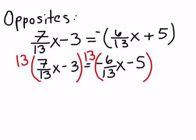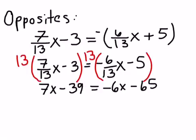But just a slight difference of signs on one side, so we will actually get a different answer. So we end up with 7x minus 39 on the left, and negative 6x minus 65 on the right.